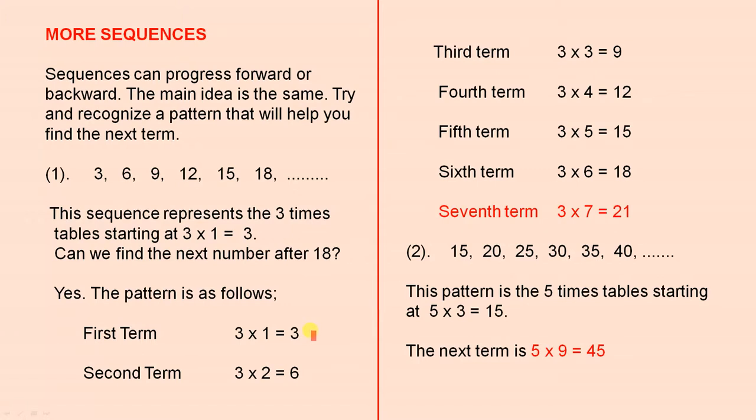The first term, three ones are three. Second term, three twos are six. Third term, three threes are nine. Three fours are twelve, three fives are fifteen, three sixes are eighteen. And the seventh term is three sevens are twenty-one. So here we have twenty-one.